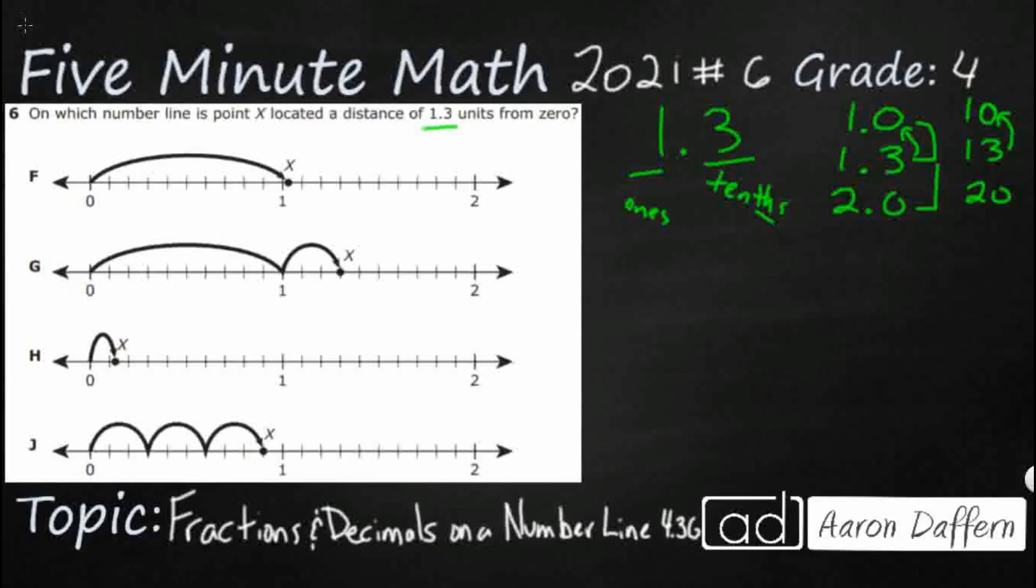Now let's take a look at our number lines here. So these number lines all look like they're marked the same way. Let's count how many spaces they have in between, so 1, 2, 3, 4, 5, 6, 7, 8, 9, 10, so these are tenths. So each of these little marks are going to represent a tenth. And so if we wanted to label them, we could do 0.1 and 0.2 and 0.3, all the way up to 1, and we could repeat the same thing if we wanted to.